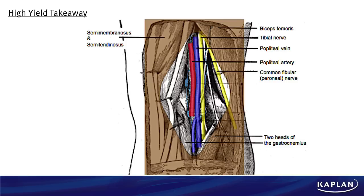High-yield takeaway: know your anatomy. This diagram here — do you know what the popliteal fossa is? What structures are in there? The arteries, the veins, the nerves, what innervates what? If you knew all that, this question should have been pretty straightforward. If not, take some time, go back, and review your anatomy. All those basic science concepts — you've got to have a good foundation in them if you want that higher score on test day.